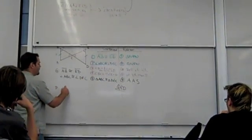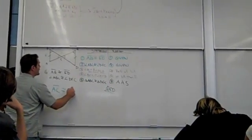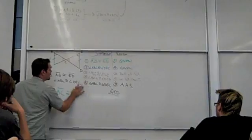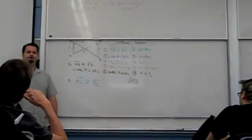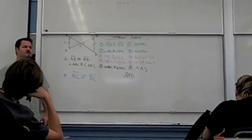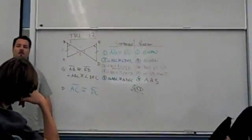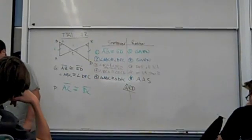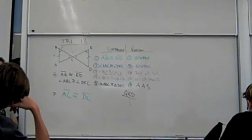Instead, I want to prove that AC is congruent to DC. Does that change my whole world here? What do you think, Aaron?